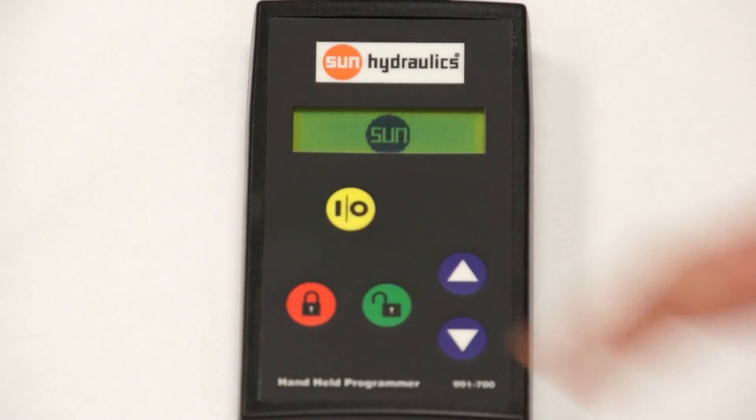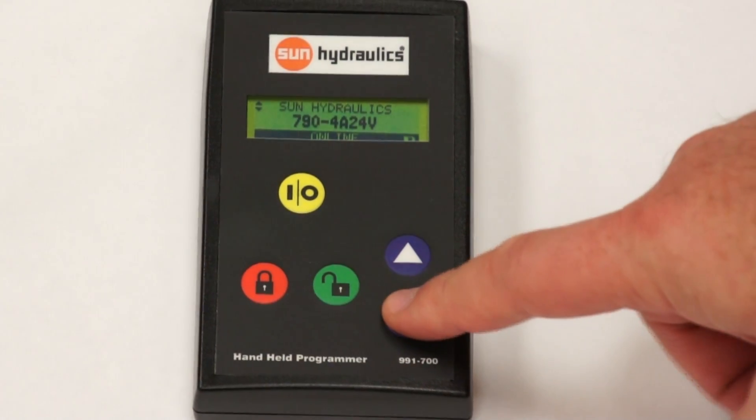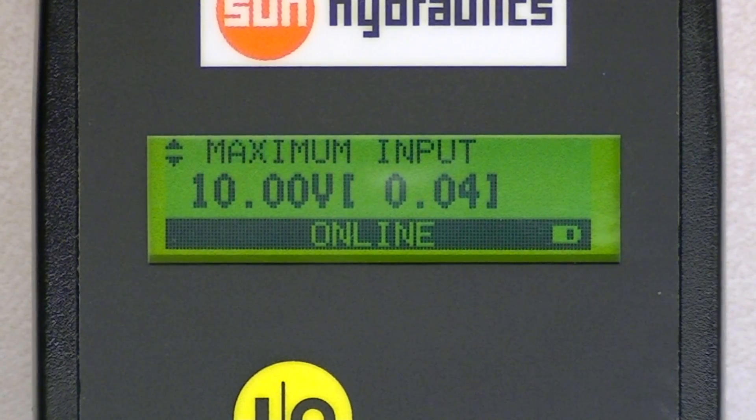Turn on the handheld programmer with the embedded amplifier powered on. Scroll down using the down arrow until you see the parameter called dither frequency.